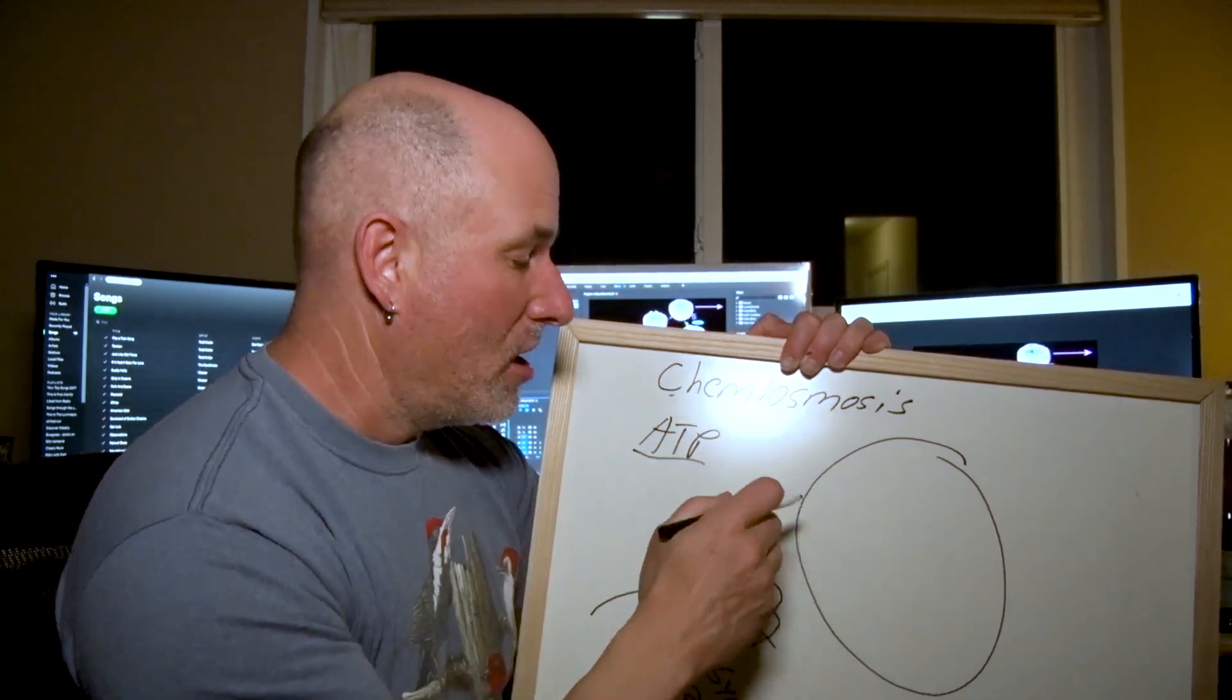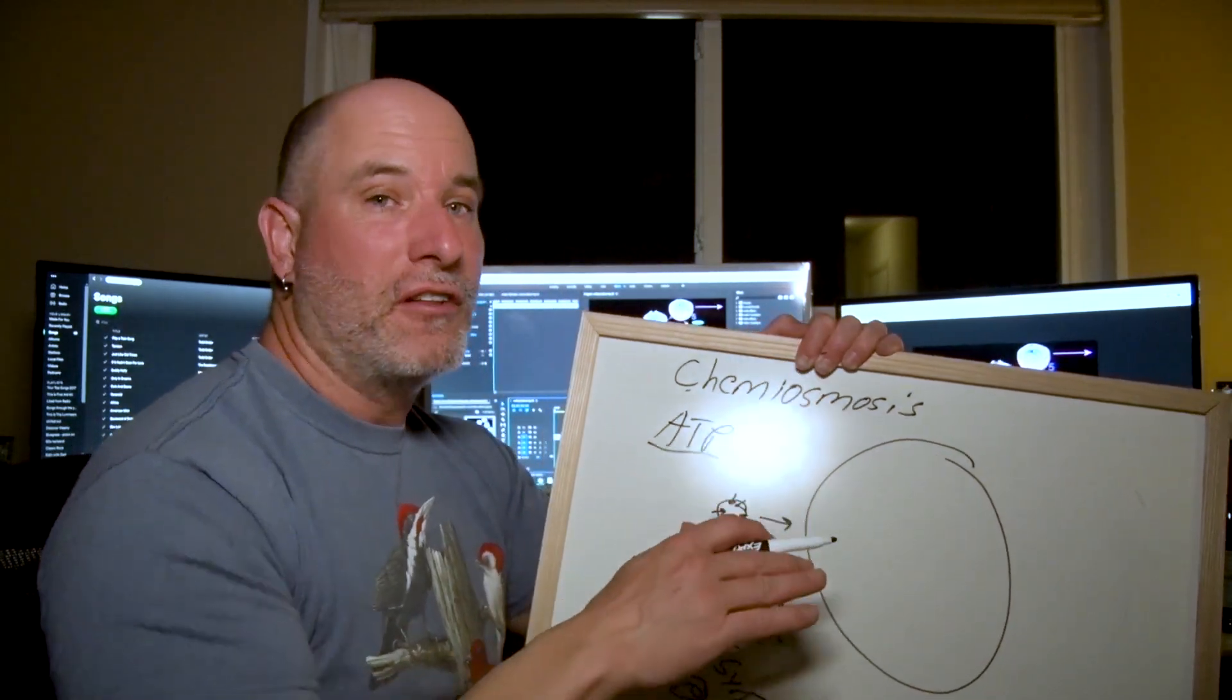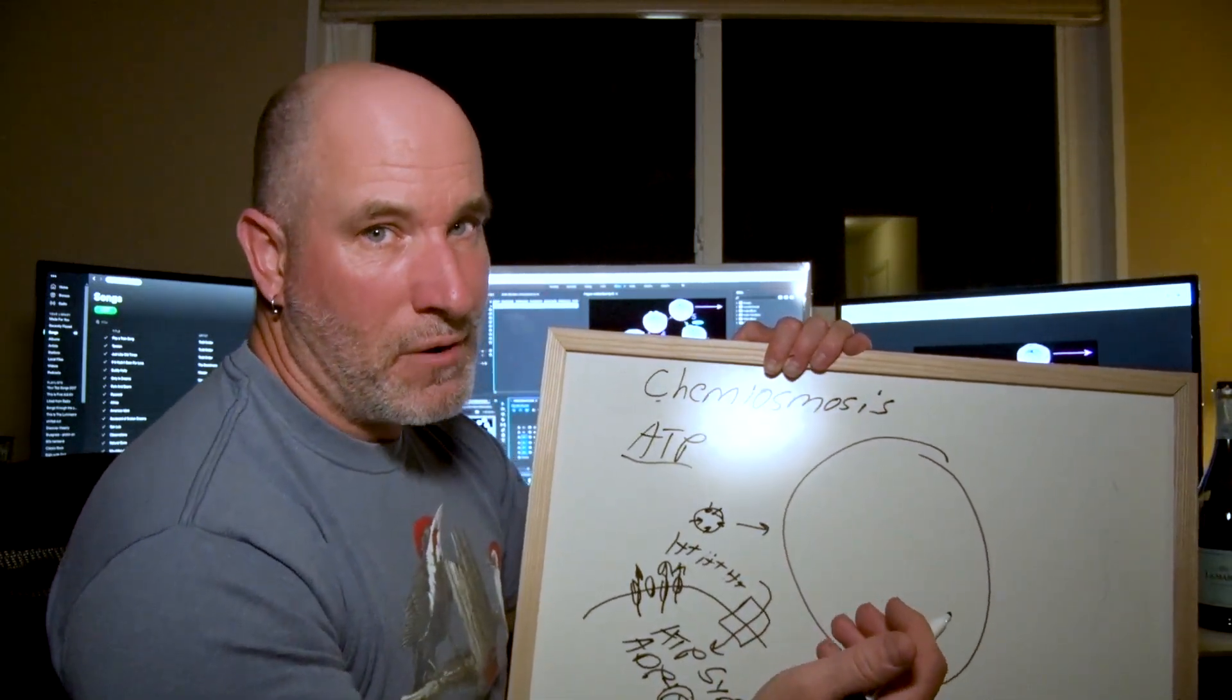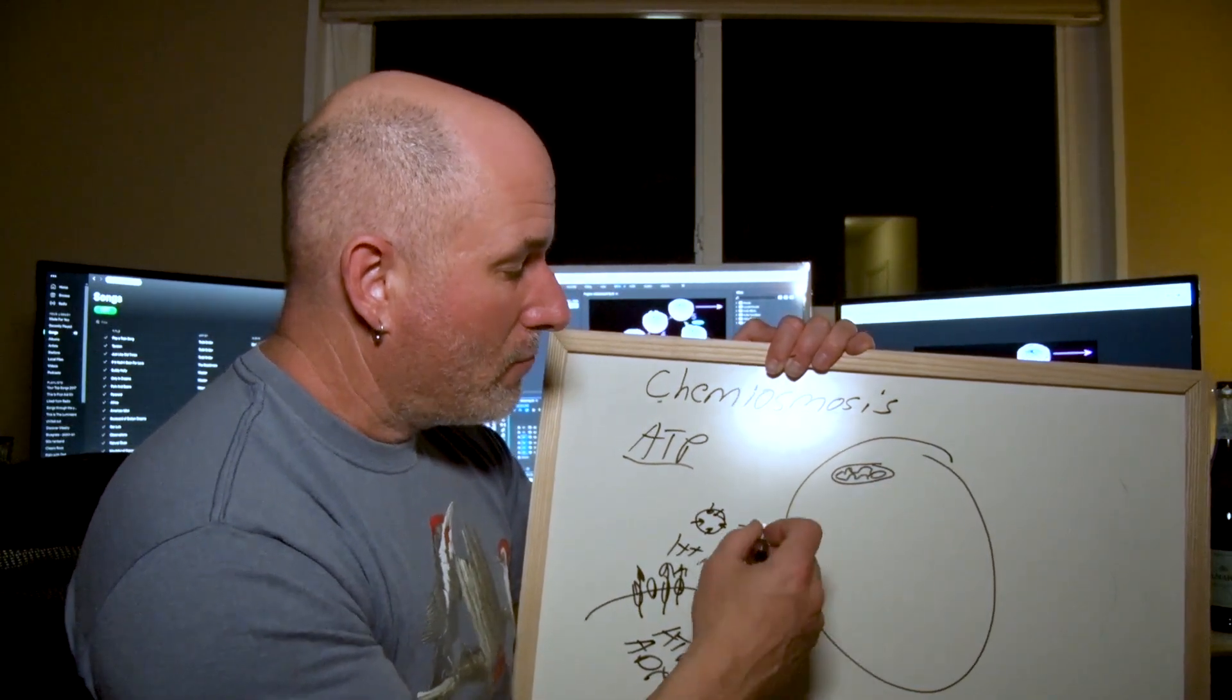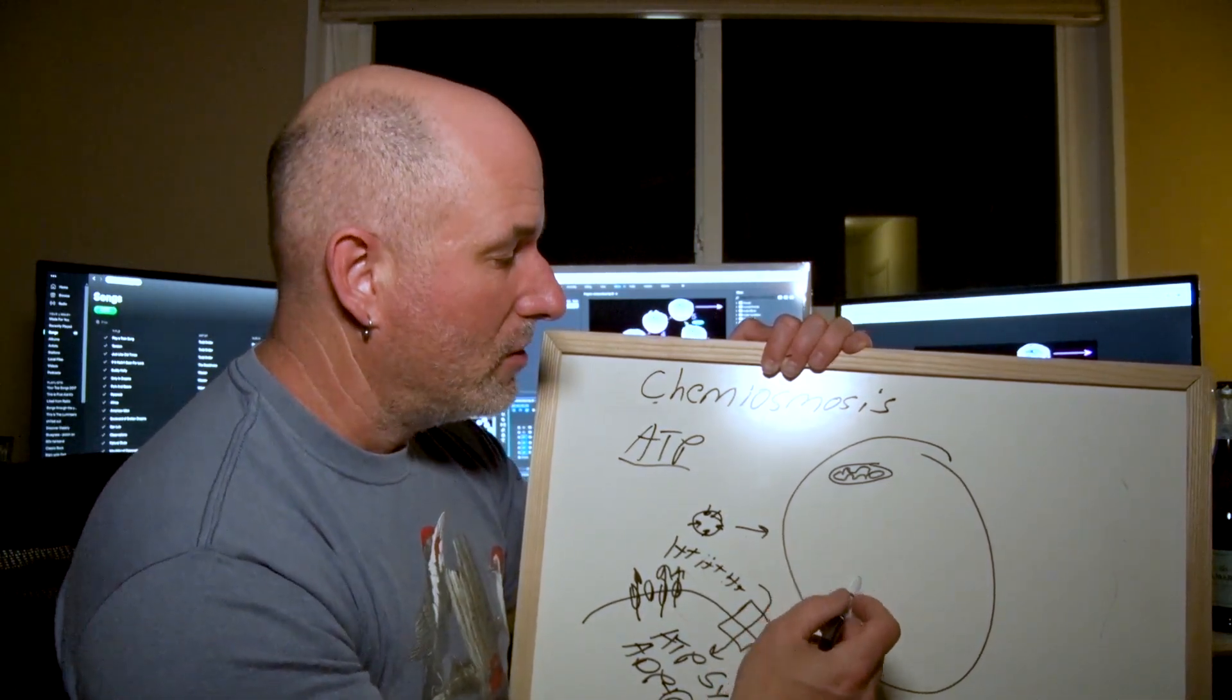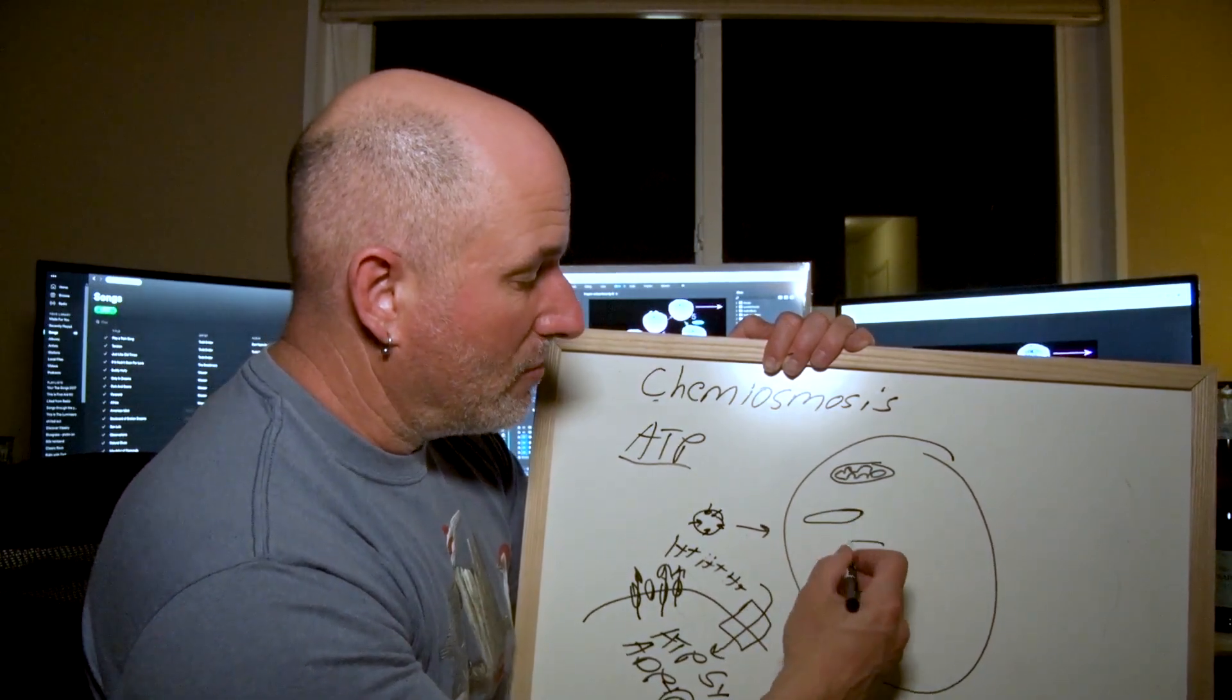Eukaryotic cells, well you all know the powerhouse of the cell is an organelle called the mitochondria. These were once free-living bacteria that merged with an archaean that evolved into eukaryotic cells through endosymbiosis.